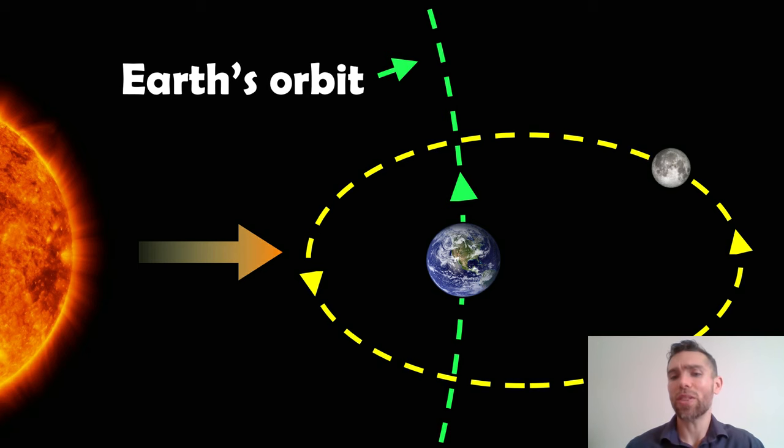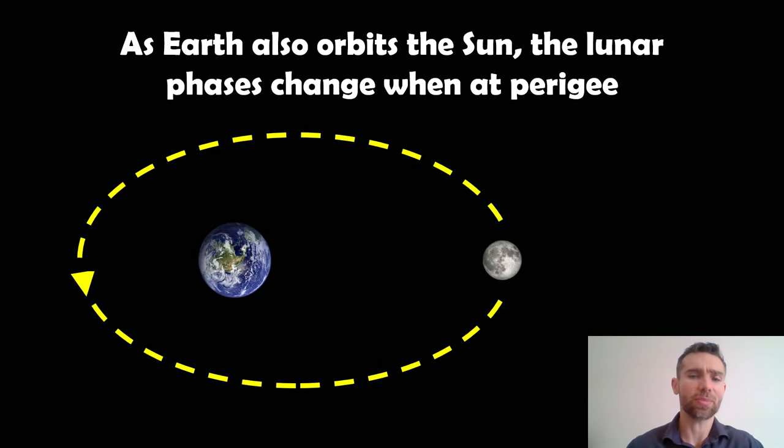So, it changes when the orbital phase occurs. So, as the Earth is orbiting the Sun, that lunar phase changes when it's at the perigee. So, sometimes it might be a full Moon, sometimes it might be a new Moon. And it just depends. Because of this extra movement of the Earth, it's going to always change.